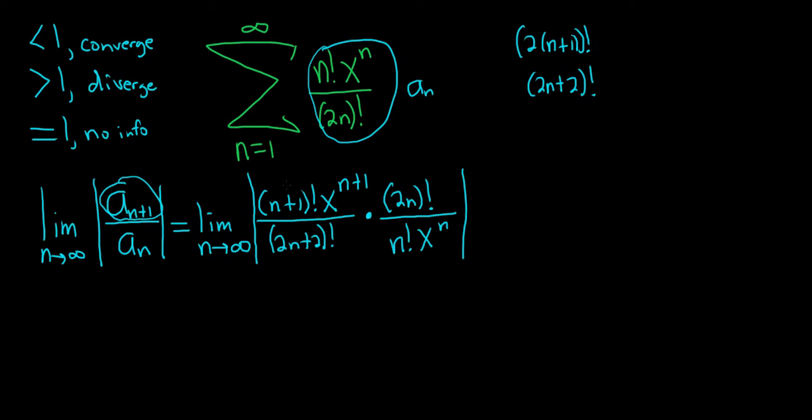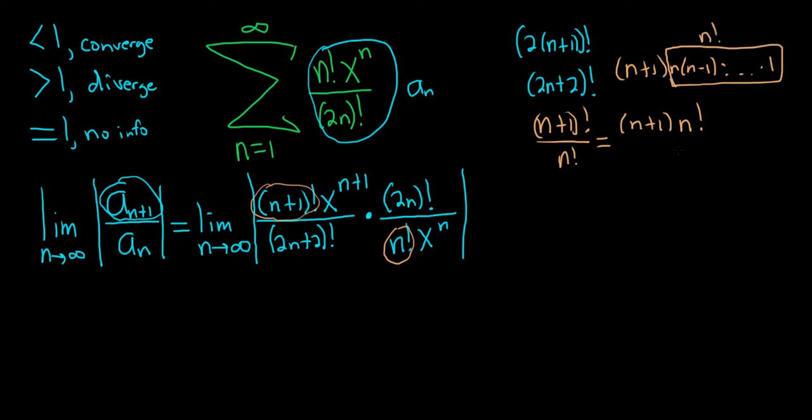Now there should be simplification with the factorials. Let's start with (n+1) factorial on top and n factorial on the bottom. (n+1) factorial is just (n+1) times n times (n-1), so (n+1) factorial equals (n+1) times n factorial. The n factorial on the bottom cancels with the numerator, leaving n+1. Let's write the limit sign and absolute value again, noting we've simplified that part.